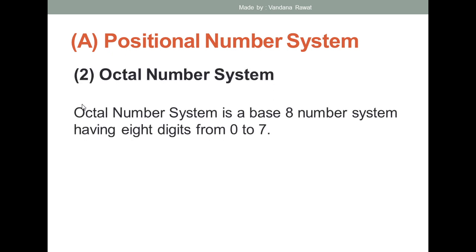The next type of positional number system is the octal number system. As the name suggests, octal means eight, so the base is eight and it has eight digits from zero up to seven. The digits that fall in this range will be valid octal digits. For example, an octal number can be like 116 — all digits of 116 are between zero and seven. Another example can be 661, which is also within the valid range.